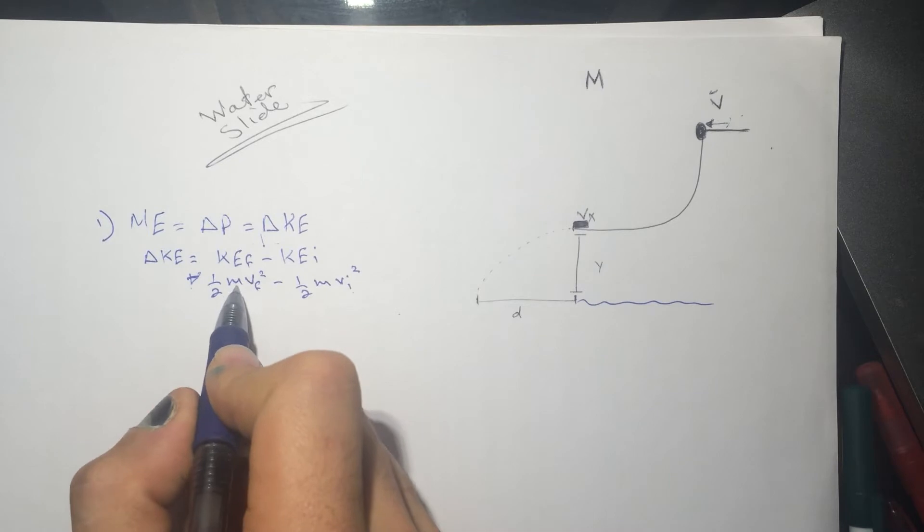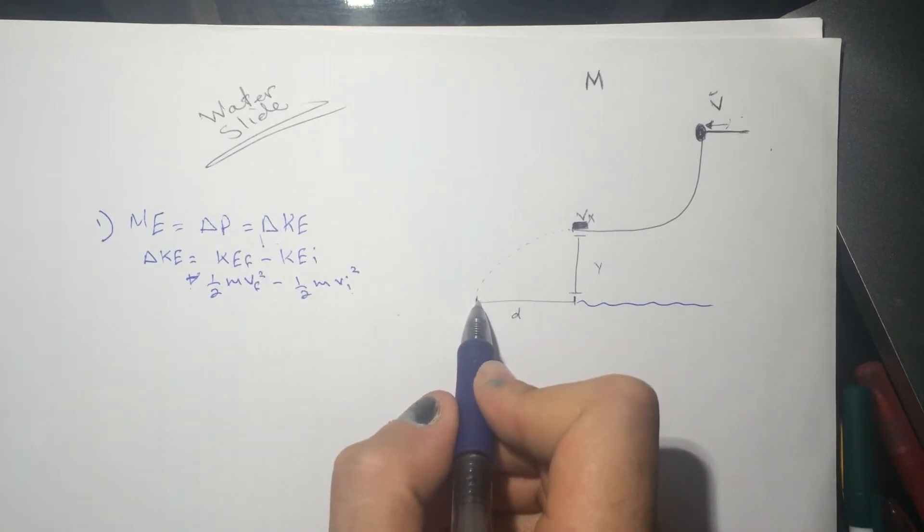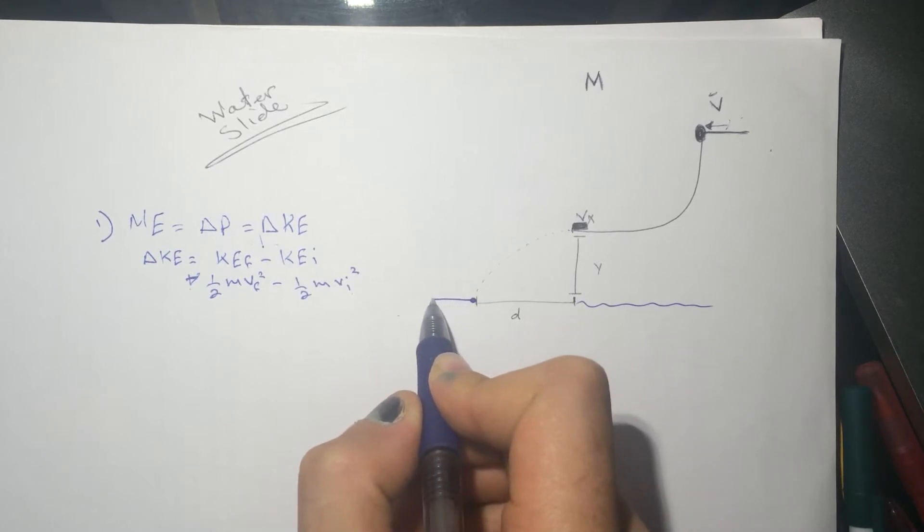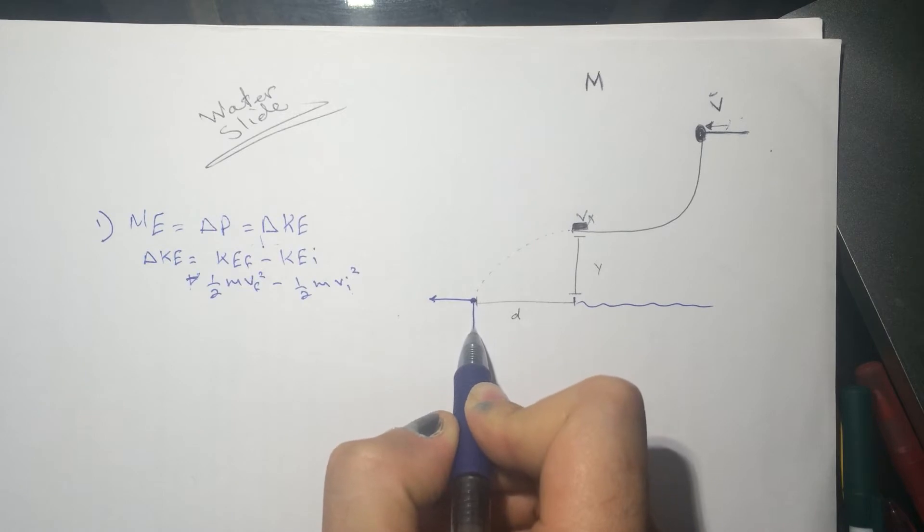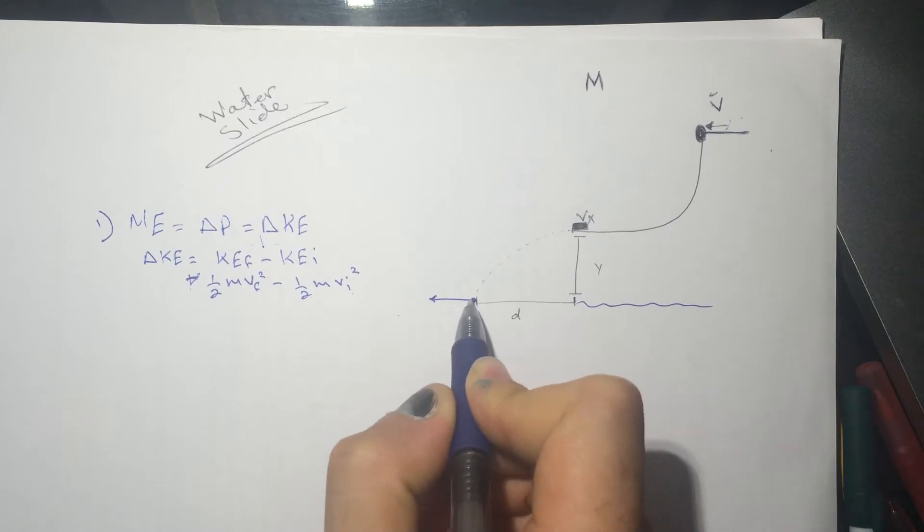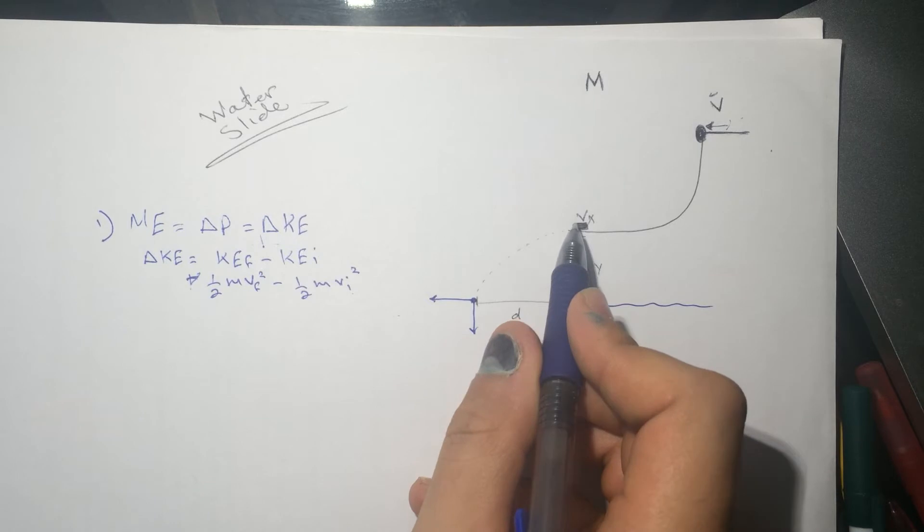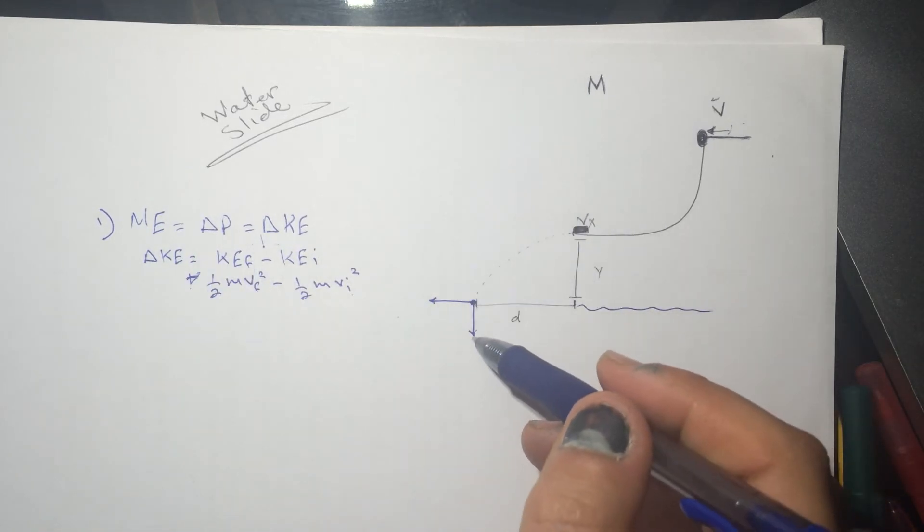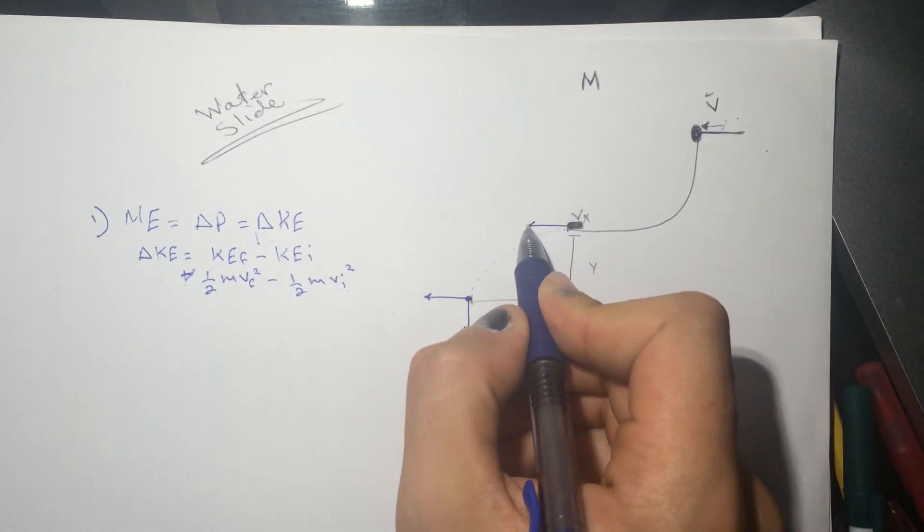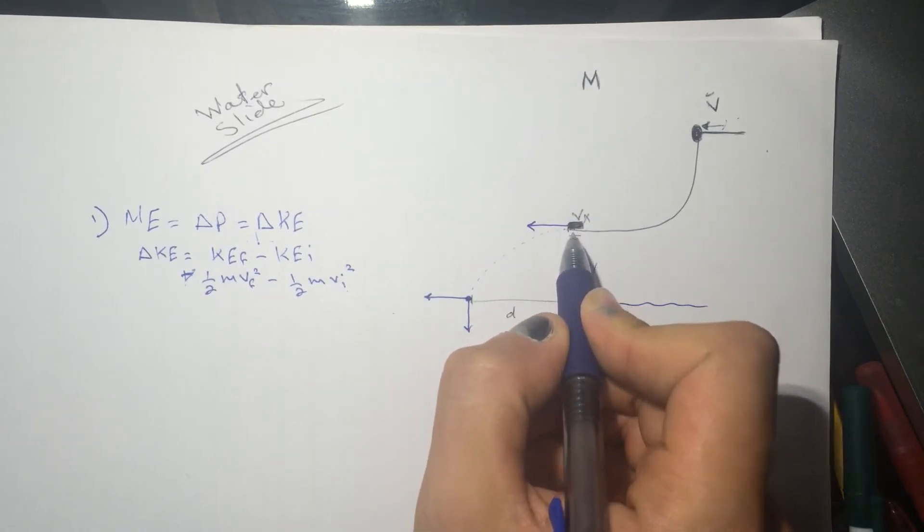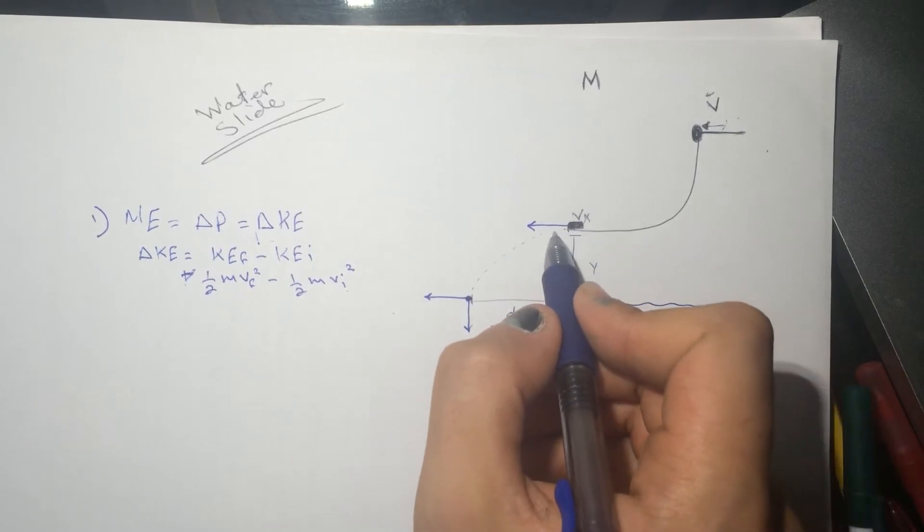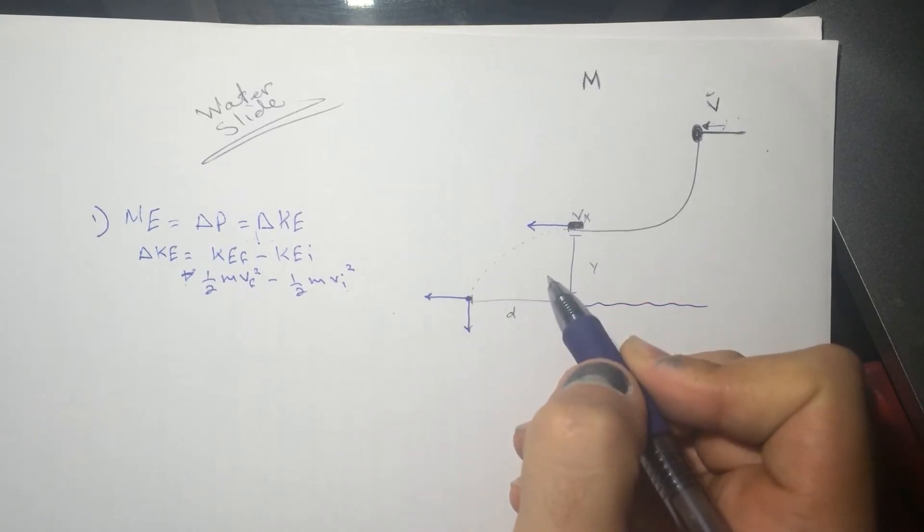So we just need to find the V final, like the speed of the thing here. And also remember, it's going to have an X and it's going to have a Y. The X is not going to change. It's going to stay the same as here because there's no acceleration in the horizontal, but there is acceleration in the Y.